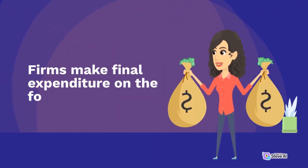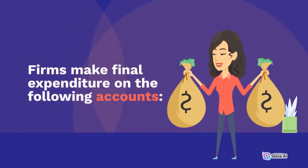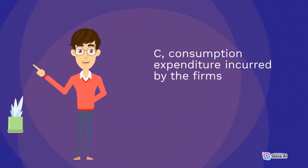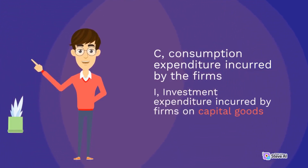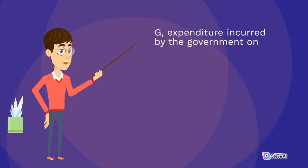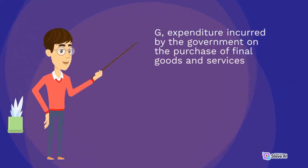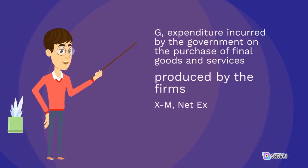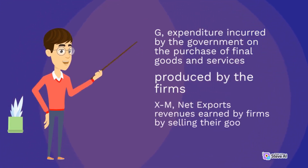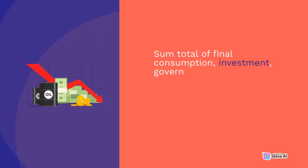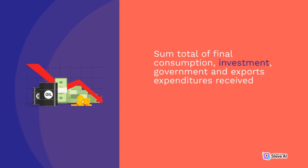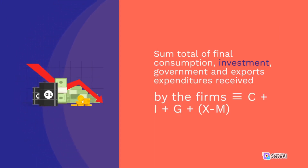Firms make final expenditure on the following accounts: C – Consumption expenditure incurred by the firms; I – Investment expenditure incurred by firms on capital goods; G – Expenditure incurred by the government on the purchase of final goods and services produced by the firms; XM – Net exports, revenues earned by firms by selling their goods and services abroad. The sum total of final consumption, investment, government, and exports expenditures received by the firms is C plus I plus G plus XM.